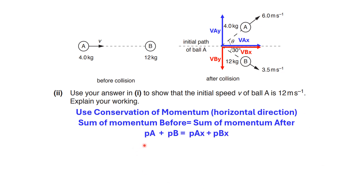At this point, you know that lowercase p is the abbreviation for momentum. The sum of momentum of A and B before collision is equal to the sum of momentum of A and B after collision. Note the x subscript means you need to use momentum in the same horizontal line. After collision we have V-Ax and V-Bx, so V-Ay and V-By are not considered in the horizontal direction.